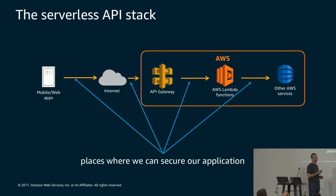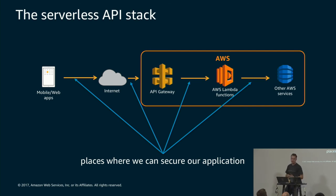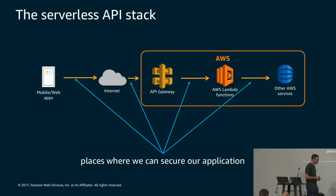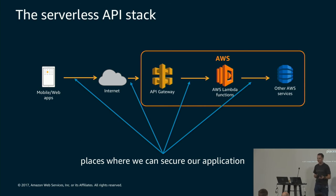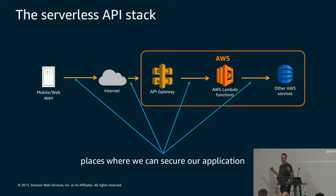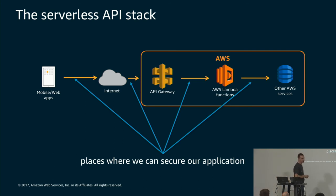Between your Lambda function and other AWS services, you've got IAM. When you create a Lambda function you can assign it an IAM role, giving it fine-grained permissions — for example, access to S3 but only specific buckets and only PUT not GET, or DynamoDB but only a specific row in a table. Don't leave that as a wide-open admin policy where your Lambda function can do anything. I've seen it. Don't do it.